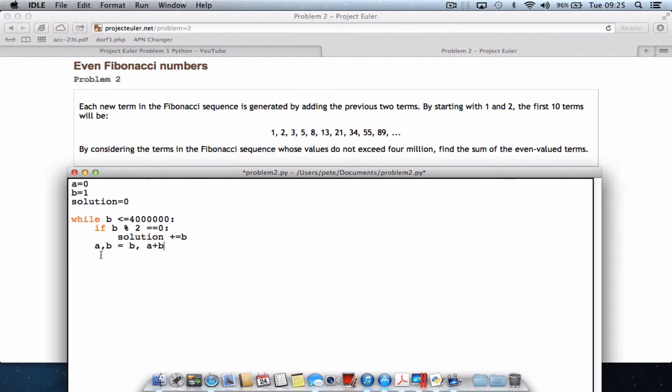Instead of using separate lines, what I've done there is just set the variable A and the variable B equals this variable. So this is being assigned to A and this is being assigned to B. And finally, the last part is just to print the solution.